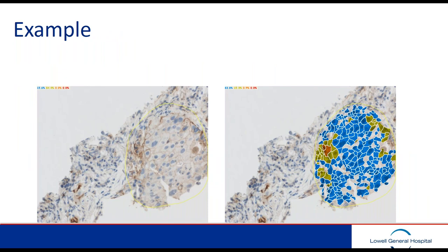On the right-hand side, you can see there is a macrophage showing background granular staining. The algorithm that was created did not count that cell — it counted only the cells adjacent to it. So that really helped optimize the system.